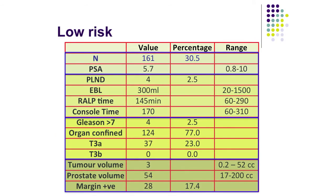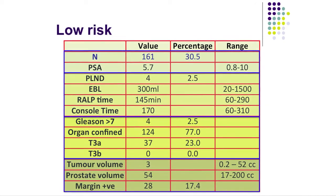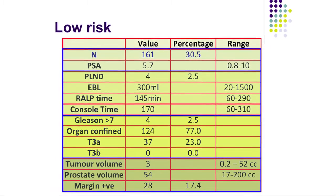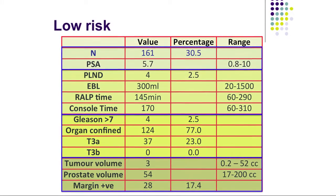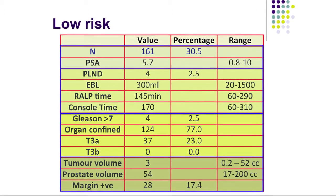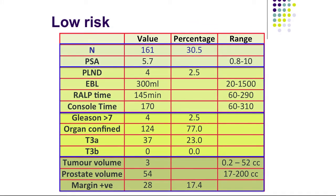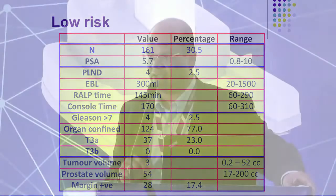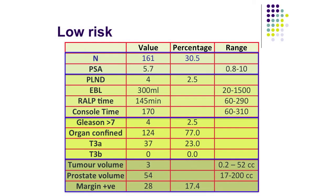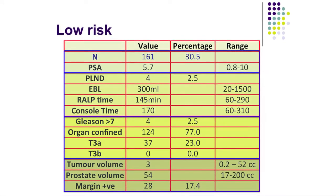The low-risk cohort comprised about a third of the overall 528 patients, and there was no significant difference with respect to surgery. RALP time was around 2 hours 25 minutes, console time 170 minutes. Looking at T3A rate — extracapsular extension on pathological staging — a quarter of low-risk cancer patients had extracapsular disease. Not much high-grade Gleason, but a quarter had extracapsular disease. Tumor volume was 3cc, overall prostate volume 54cc, and the margin positive rate was 17.4 percent.